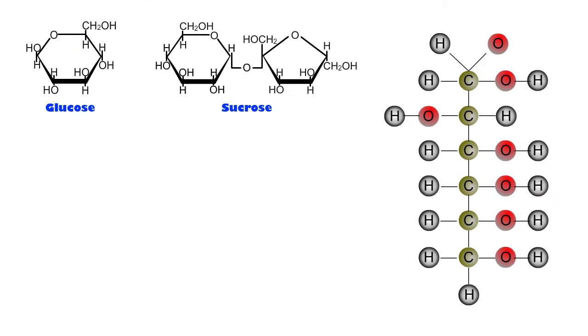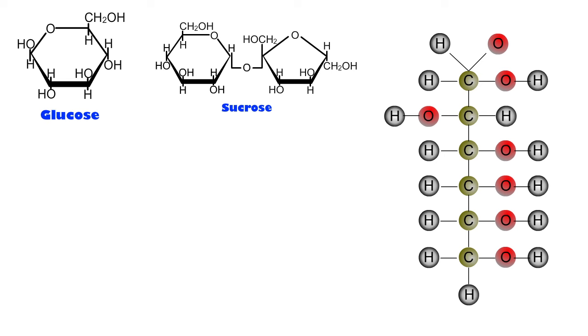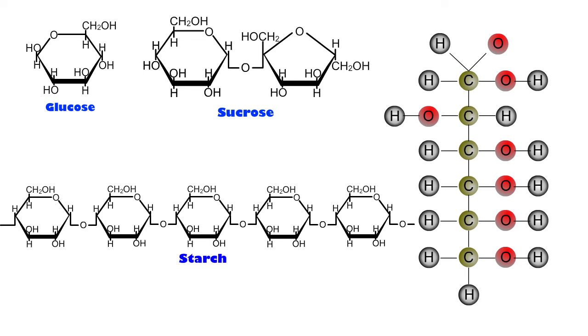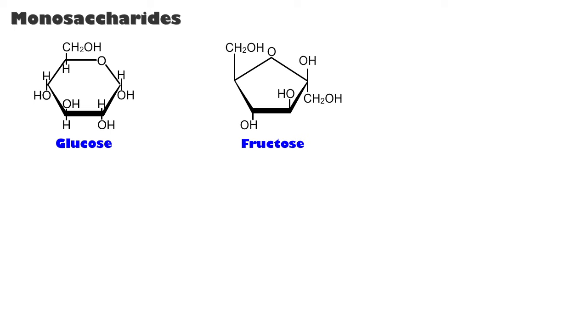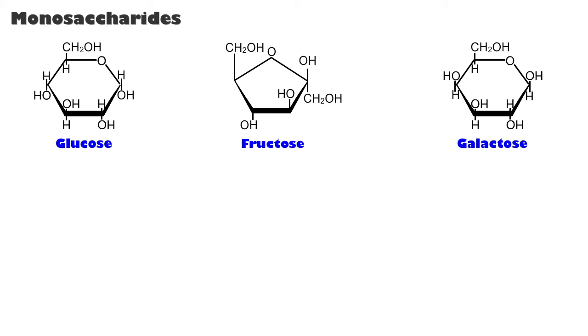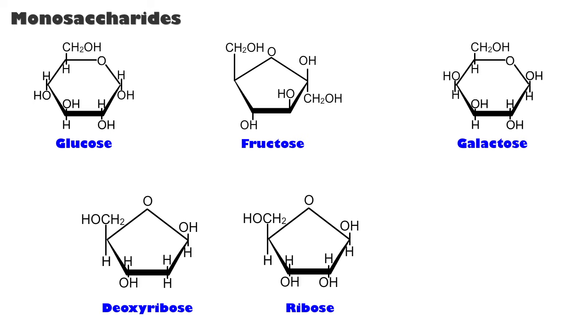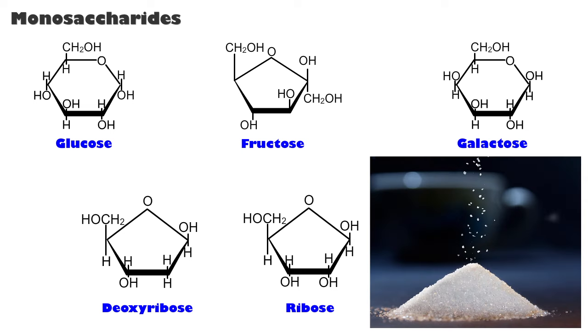Carbohydrates are classified according to molecular size and solubility. In general, the smaller molecules are more soluble than the larger ones. Monosaccharides include glucose, fructose, galactose, deoxyribose, and ribose. Monosaccharides are a single unit of sugar and are the smallest carbohydrate.